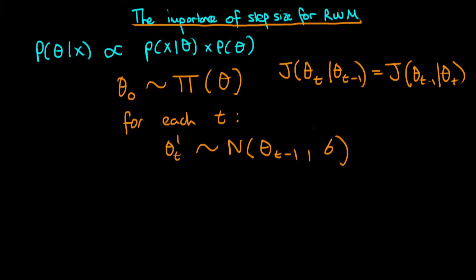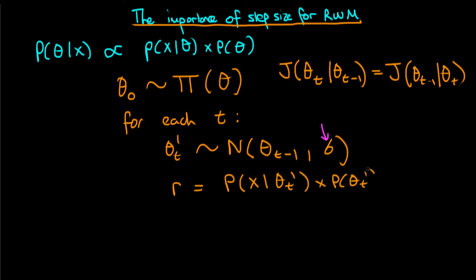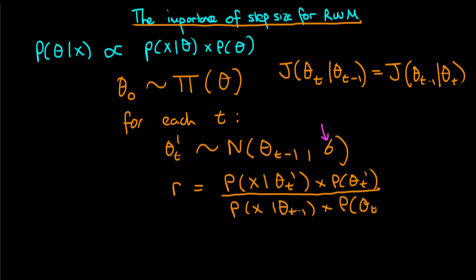This normal distribution is set to some arbitrary step size sigma, and in this video it's this quantity — sigma — that we're going to be talking about. The next part of the algorithm involves calculating a ratio: the proposed unnormalized density p(x | theta t primed) times p(theta t primed), divided by p(x | theta t minus one) times p(theta t minus one).